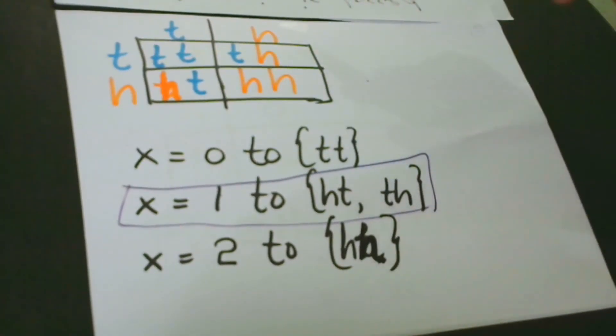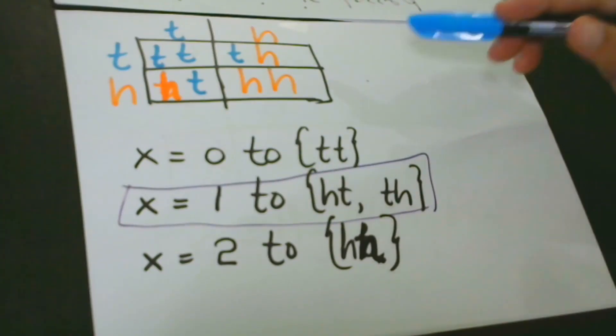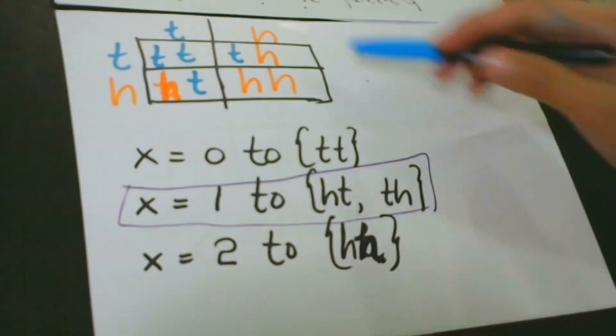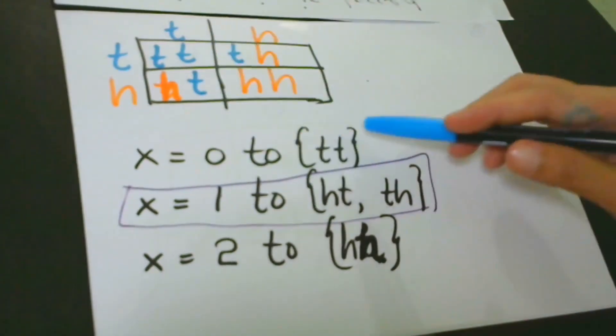A probability distribution of a discrete random variable X is a list of each possible value of X together with the probability that X takes that value in one trial event. For a better understanding of this definition, let's go to the solution step by step. Our first step is to identify the possible values that X can take using the Cartesian product.